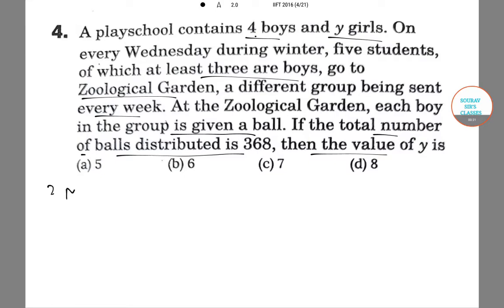So now, there are two possible groupings. Either we could have three boys and two girls, or four boys and one girl.